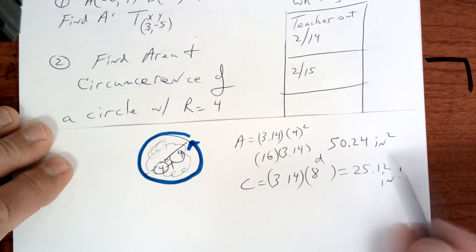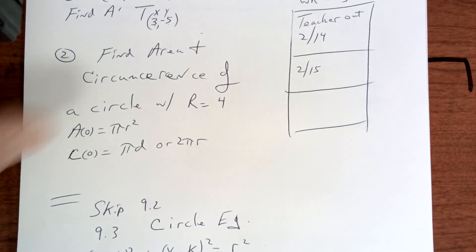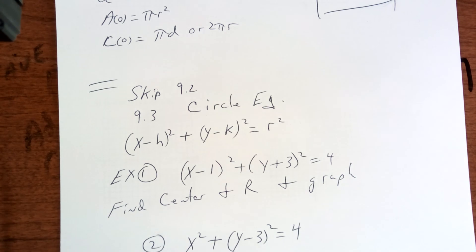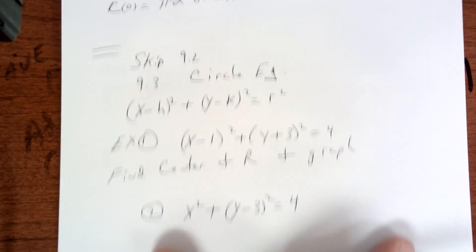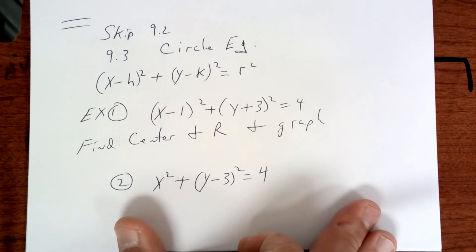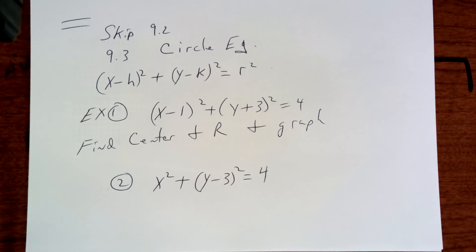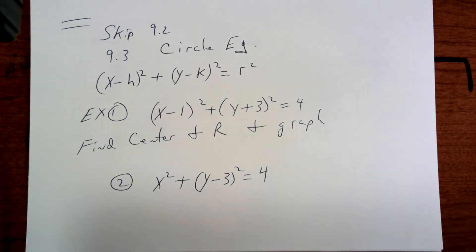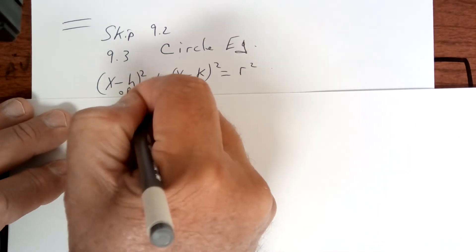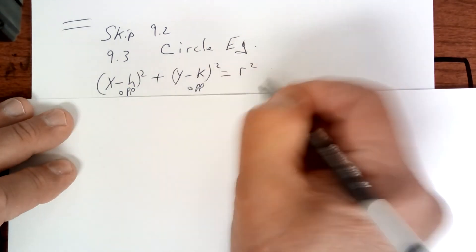We're going to skip section 9.2. Let's talk about 9.3 — copy everything down that you see right here. We're going to talk about circles today, so pay attention. The way you do circles is — memorize this — opposite, opposite, square root.